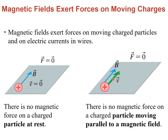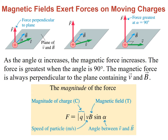Somehow the force has to do with the angle between the velocity and the magnitude of the magnetic field. In general terms, the force depends on the charge, the speed, the magnetic field, and the angle between these two. The magnitude of such force can be calculated through this expression where q is the charge, v is the speed, B is the magnetic field in Teslas, and then you take the sine of the angle between the two.